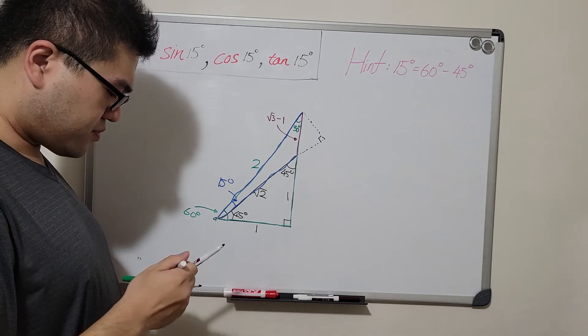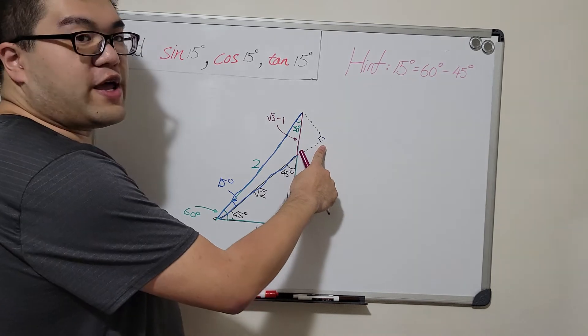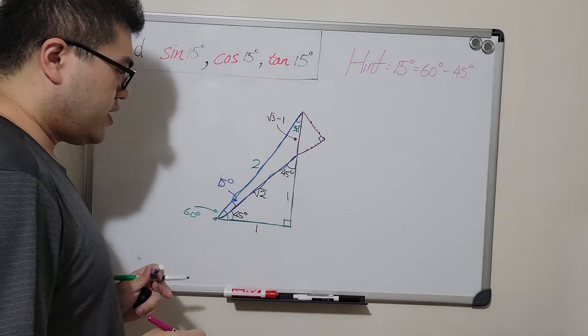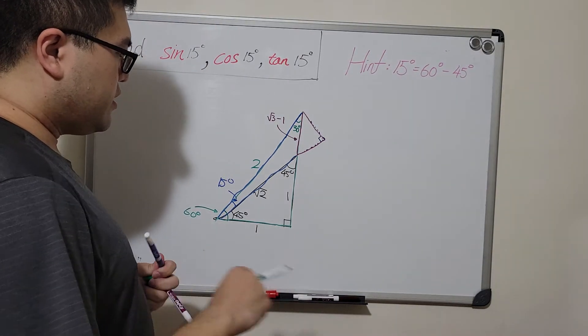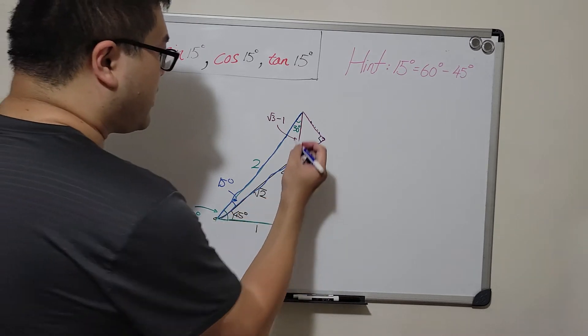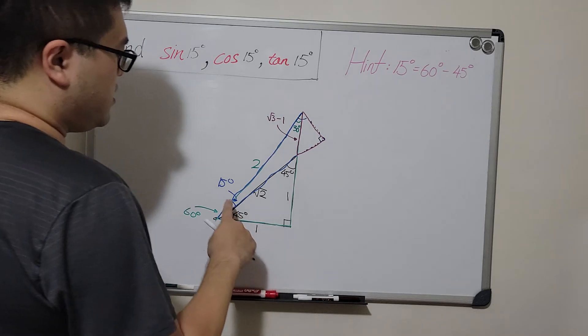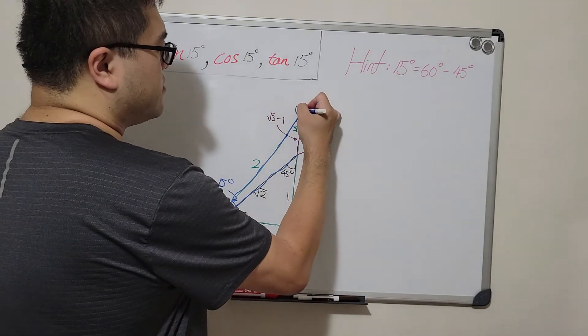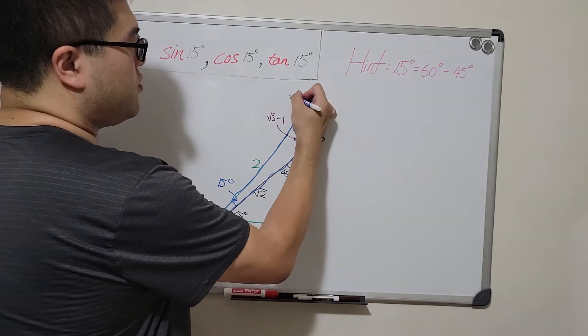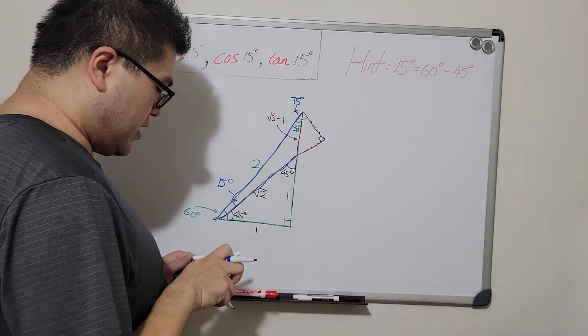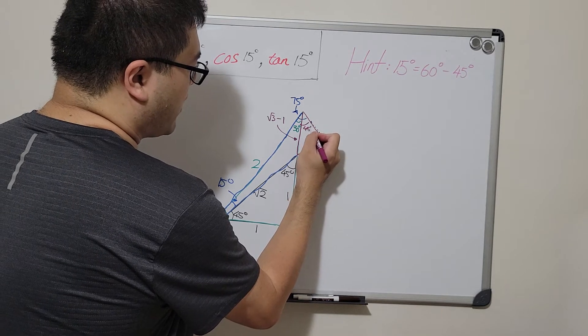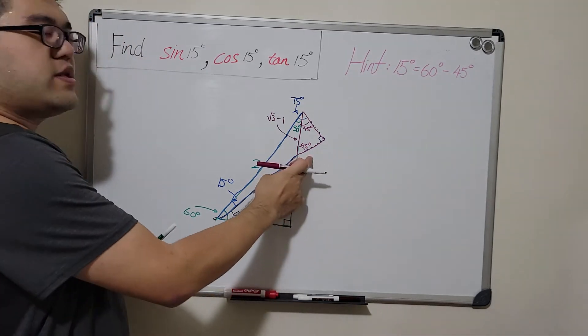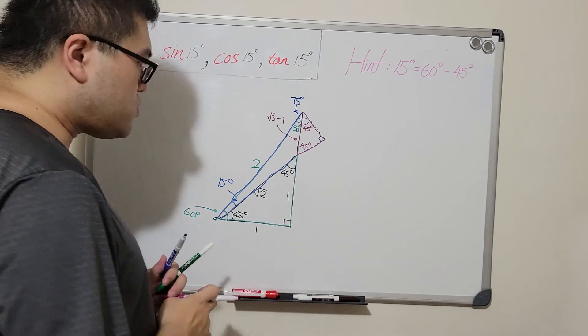Now, notice that with the right angle here, we also have another right triangle in purple. And if we consider this angle up here, since we have a right triangle with one of the angles being 15 degrees, the other angle will then be 90 minus 15, which is 75 degrees, telling us this angle down here will be 45 degrees. And this will also be 45 degrees, meaning we actually get another isosceles triangle.